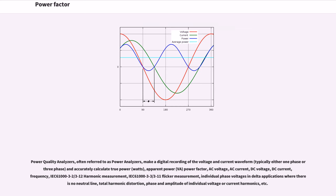Power quality analyzers, often referred to as power analyzers, make a digital recording of the voltage and current waveform and accurately calculate true power, apparent power, power factor, AC voltage, AC current, DC voltage, DC current, frequency, IEC 61003-12 harmonic measurement, IEC 61003-13 flicker measurement, individual phase voltages and delta applications where there is no neutral line, total harmonic distortion, and phase and amplitude of individual voltage or current harmonics.